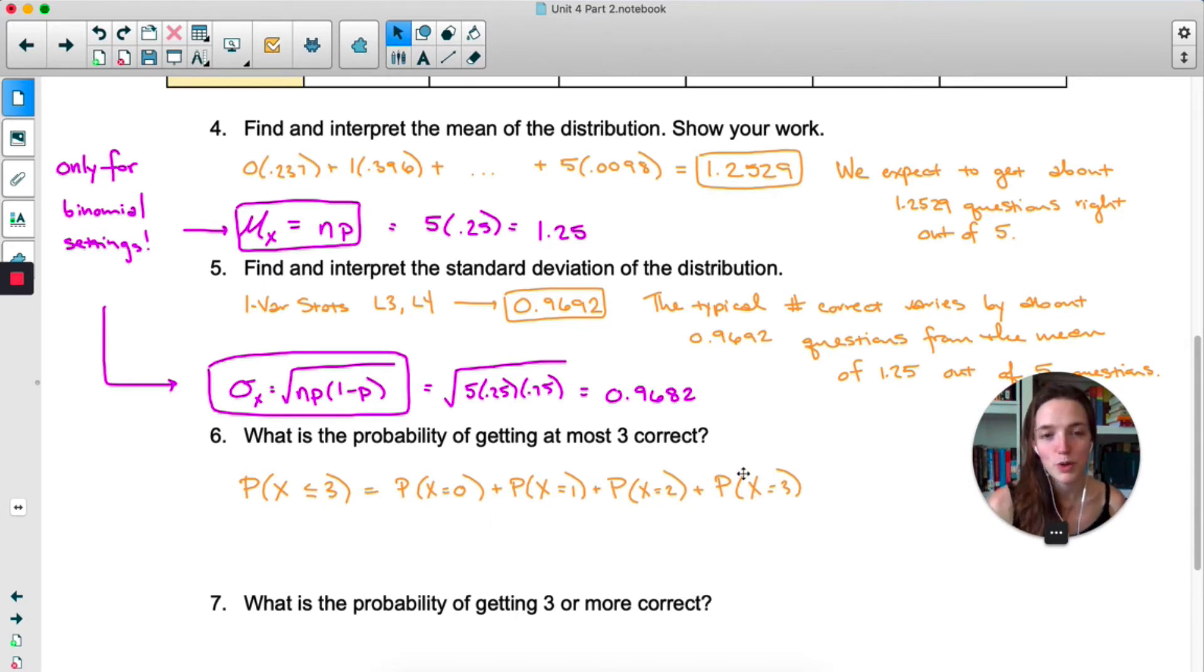Probability of 0, 1, 2, and 3, and then we could add them all together. It's a little bit faster now that we have binom pdf, but that's still a pain, and there is a faster way.